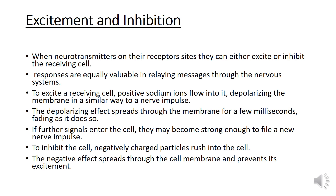If further signals enter, they may become strong enough to fire a new nerve impulse. To inhibit the cell, negatively charged particles rush into the cell. The negative effect spreads through the cell membrane and prevents its excitation.